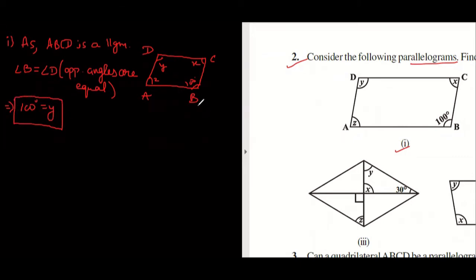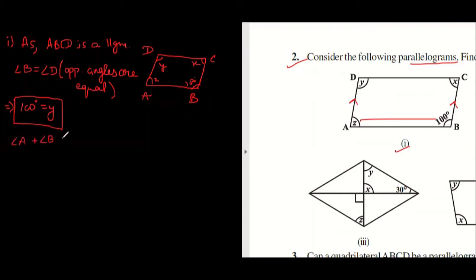Since these two lines are parallel, these two angles are adjacent to each other. So angle A plus angle B equals 180 degrees. We will write the property for this.